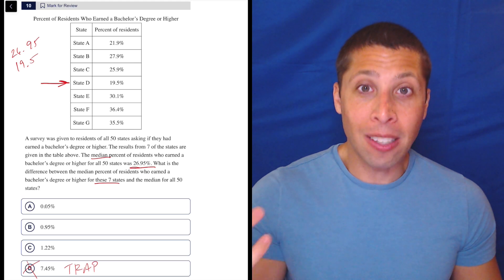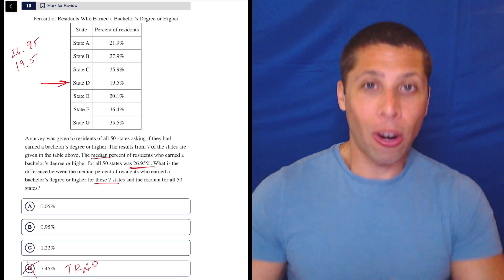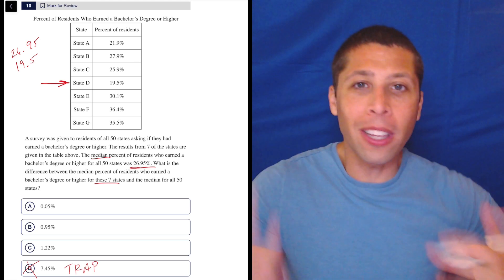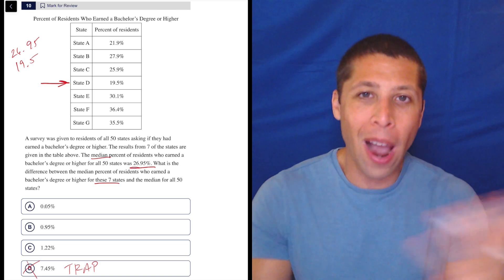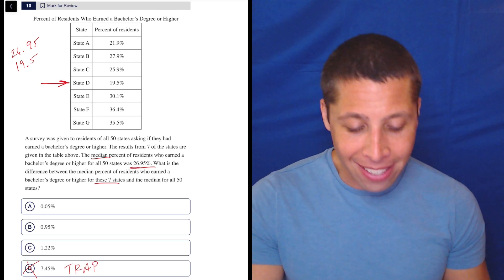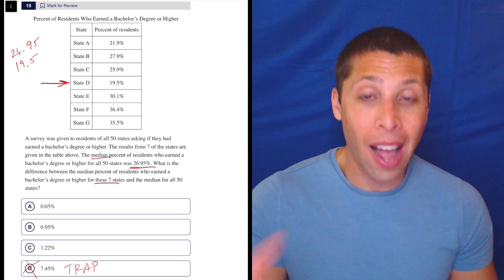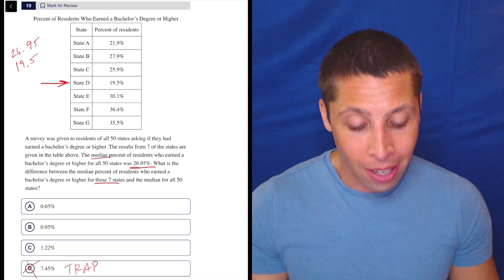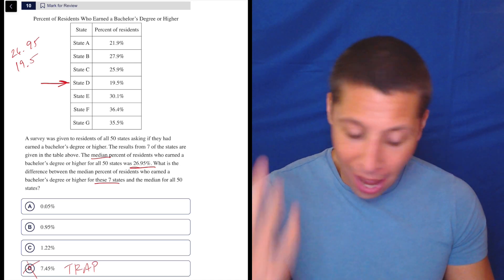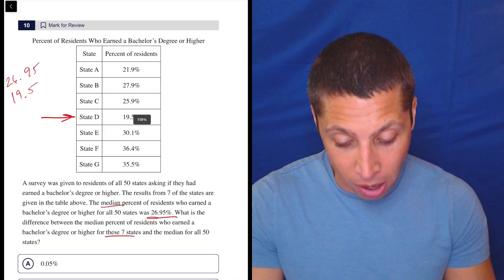But second of all, it's median. The most common trap for median on the SAT is they just put the numbers in a different order. So you have to unscramble them. That's it. So I don't know. This is obvious too, because it's not even like 19.5 is close to the middle. It's the lowest number. There's just so many things going wrong here for people.